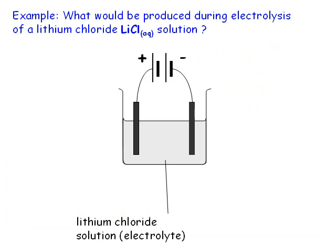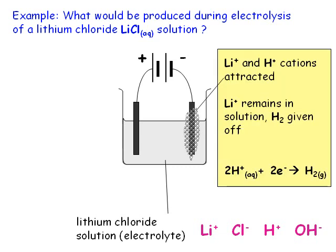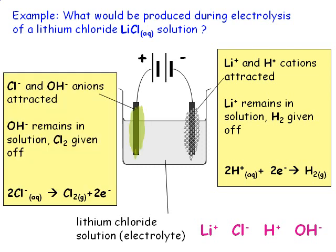We can work through some examples to make sure of how these rules apply. Here is a lithium chloride solution. We can work out what ions it will contain: Li⁺ and Cl⁻ from the lithium chloride, and H⁺ and OH⁻ from the water. The Li⁺ and H⁺ ions will both be attracted to the negative electrode, and because lithium is more reactive than hydrogen, the Li⁺ ions will stay in the solution. The H⁺ ions will gain electrons and become hydrogen atoms, which will pair up to form molecules of the element hydrogen, as shown in the half equation. The Cl⁻ and OH⁻ ions will both be attracted to the positive electrode. Because chloride ions are present, according to our rule, they will lose electrons and form molecules of the element chlorine, while the hydroxide ions stay in the solution.